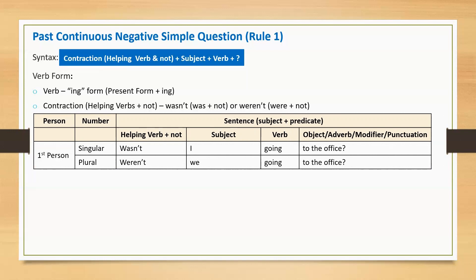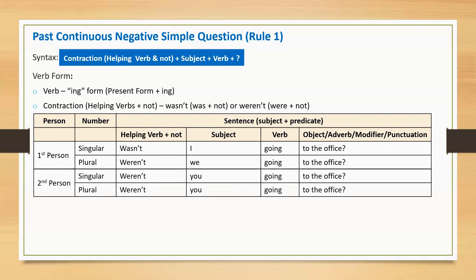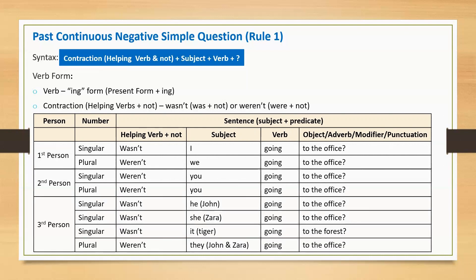First person plural: Weren't we going to the office? Second person singular: Weren't you going to the office? Second person plural: Weren't you going to the office?